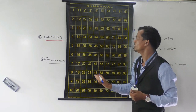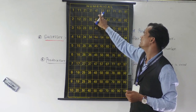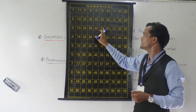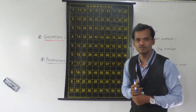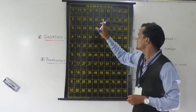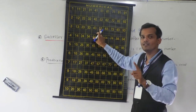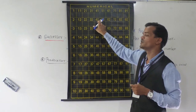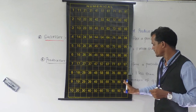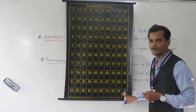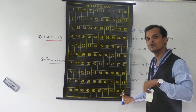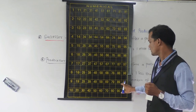You can observe any number. If we take 52, so after 52, 53 comes — and this 53 is 1 more than 52. We can observe here also: 99 — after 99, 100 comes, so 100 is 1 more than 99.